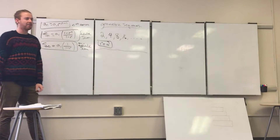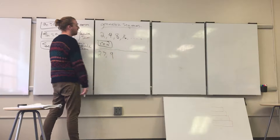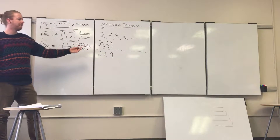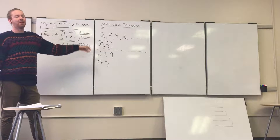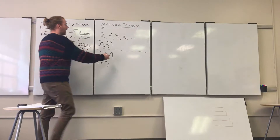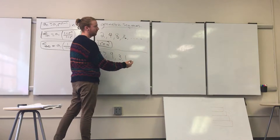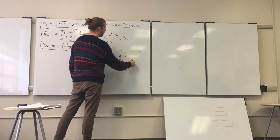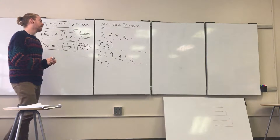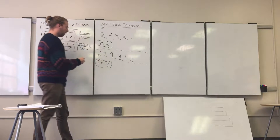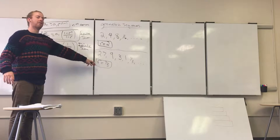Sequences can also be decreasing. For example, starting with 27 going down to 9 — you'd have to multiply 27 by one-third to get 9. So R would be one-third: 27 times one-third is 9, 9 times one-third is 3, 3 times one-third is 1, 1 times one-third is one-third, then one-ninth, one-twenty-seventh, etc. So sequences can be increasing where R is greater than 1, or decreasing where R is less than 1.